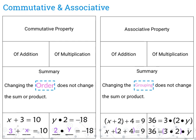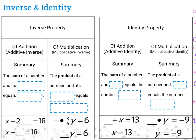Moving on, we're talking about the inverse and identity properties. The inverse property works for both addition and multiplication. The additive inverse property says that the sum of a number and its opposite gives us 0. So if we have x plus 2 and we add negative 2, positive 2 and negative 2 cancel each other out and give us 0 — they are inverses.